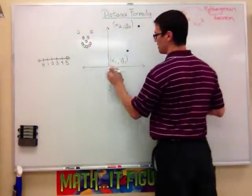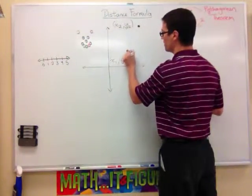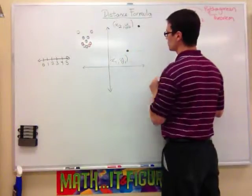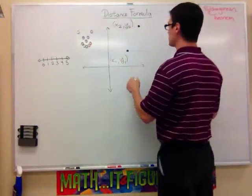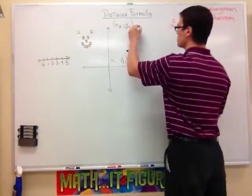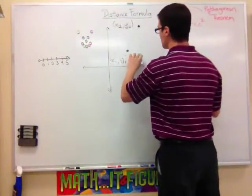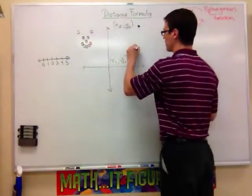What I'm also going to do is make a line that's parallel with the x-axis from this point right here. So, it's supposed to be parallel with the x-axis. And then I'm going to make a line that's parallel with the y-axis from this point right here. And what, in essence, you end up making is a right triangle.